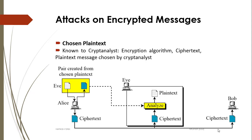In a chosen plaintext attack, the attacker knows the encryption algorithm, the ciphertext, and a plaintext message chosen by the cryptanalyst. The attacker can select or choose the plaintext that is sent through the encryption algorithm and observe the ciphertext output. This is an active model. Being able to choose any plaintext and observe the ciphertext gives the attacker a strong idea about the working of the algorithm and the secret key. Another approach is to generate a database of popular plaintext-ciphertext pairs and use this to determine the secret key.